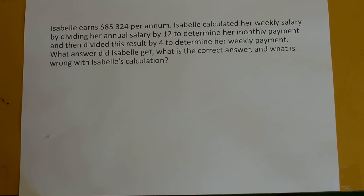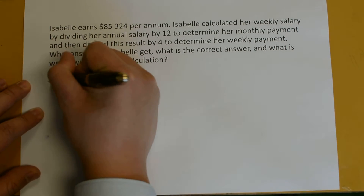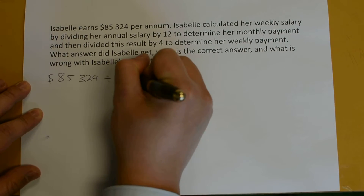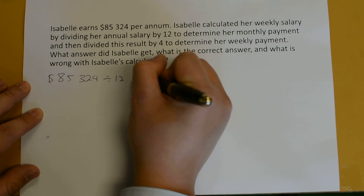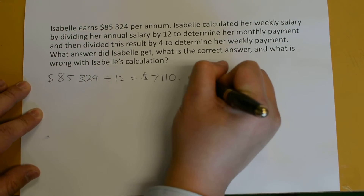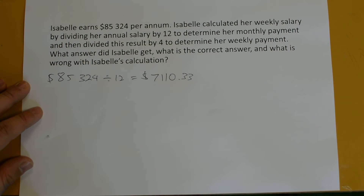Isabel earns $85,324 per annum, which means for every year. Isabel calculated her weekly salary by dividing her annual salary by 12 to determine her monthly payments. So $85,324 divided by 12 on the calculator gives approximately $7,110.33, rounded to the nearest cent.